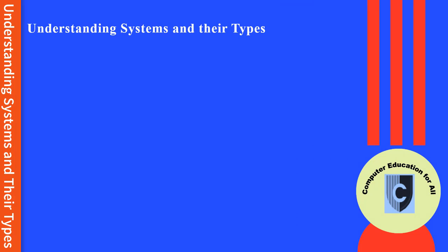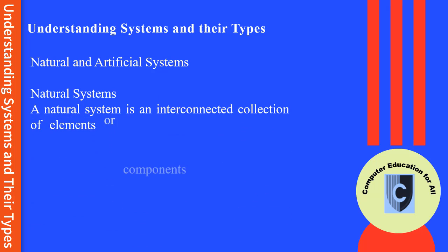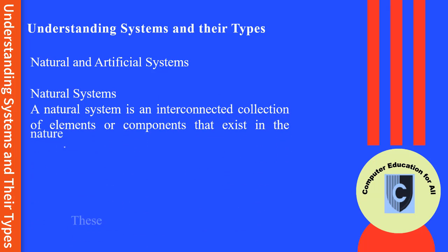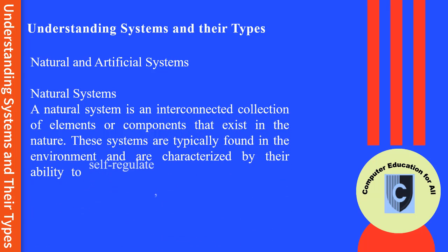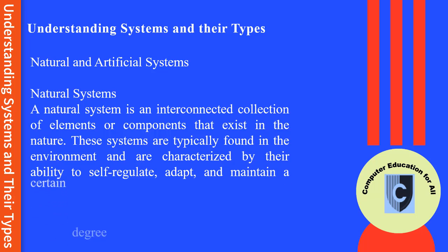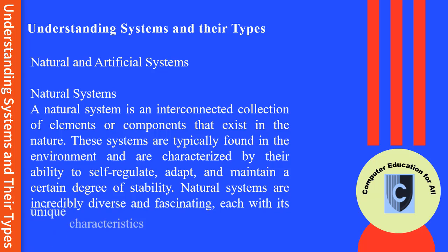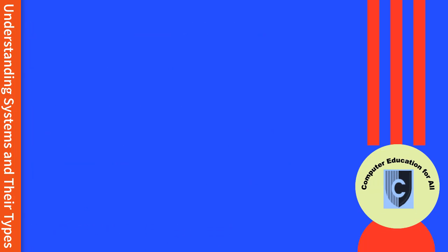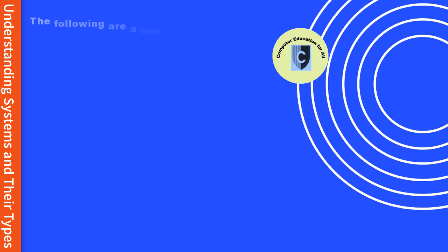Natural and artificial systems. A natural system is an interconnected collection of elements or components that exist in nature. These systems are typically found in the environment and are characterized by their ability to self-regulate, adapt, and maintain a certain degree of stability. Natural systems are incredibly diverse and fascinating, each with its unique characteristics and interactions. Some natural systems are shown in FIG 1.13.